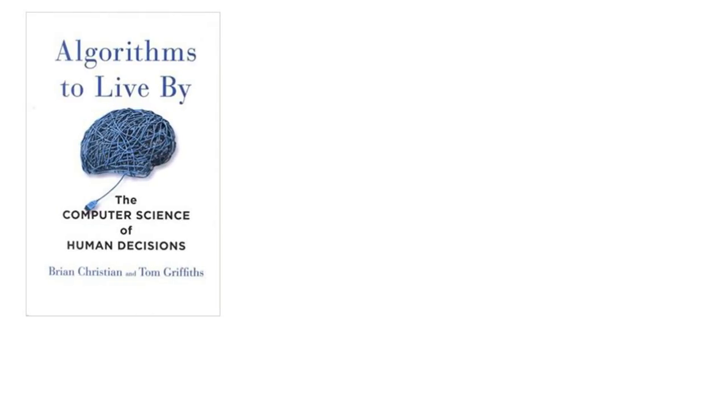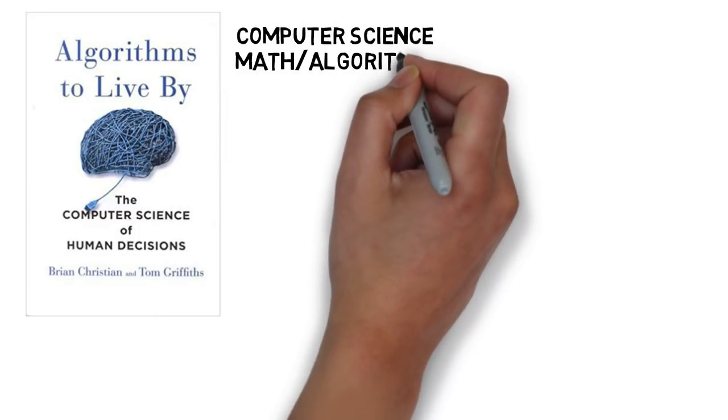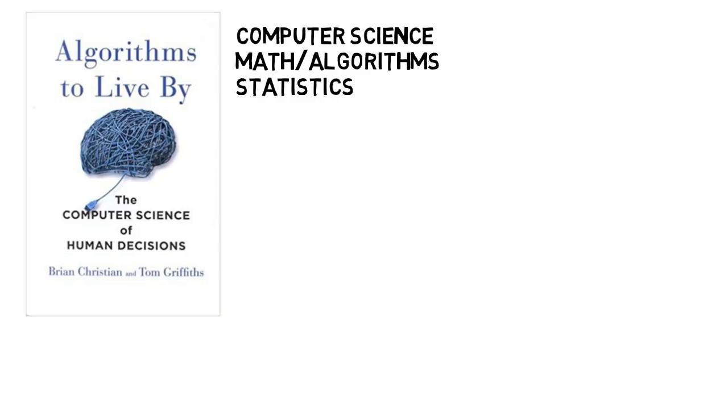Next up is Algorithms to Live By: The Computer Science of Human Decisions, which is great for anyone interested in computer science, math and mathematical algorithms, statistics, and especially how they all come together to solve various problems in the world of computer science, but also our everyday lives.